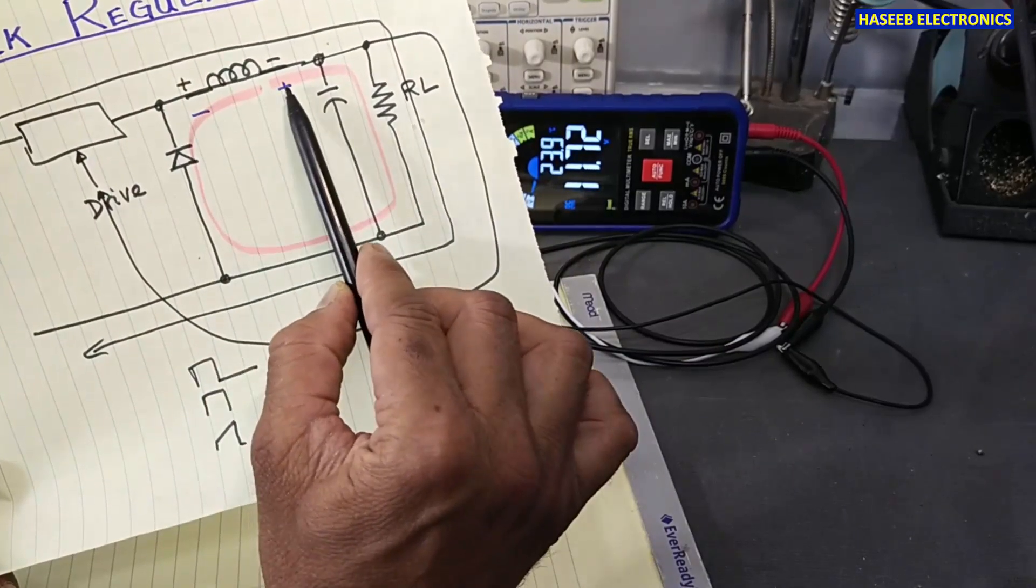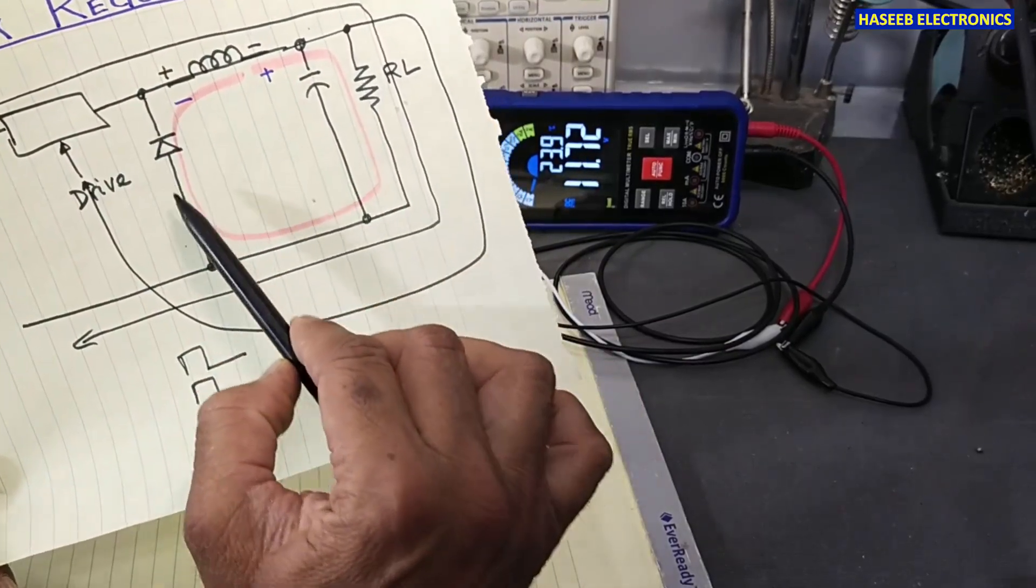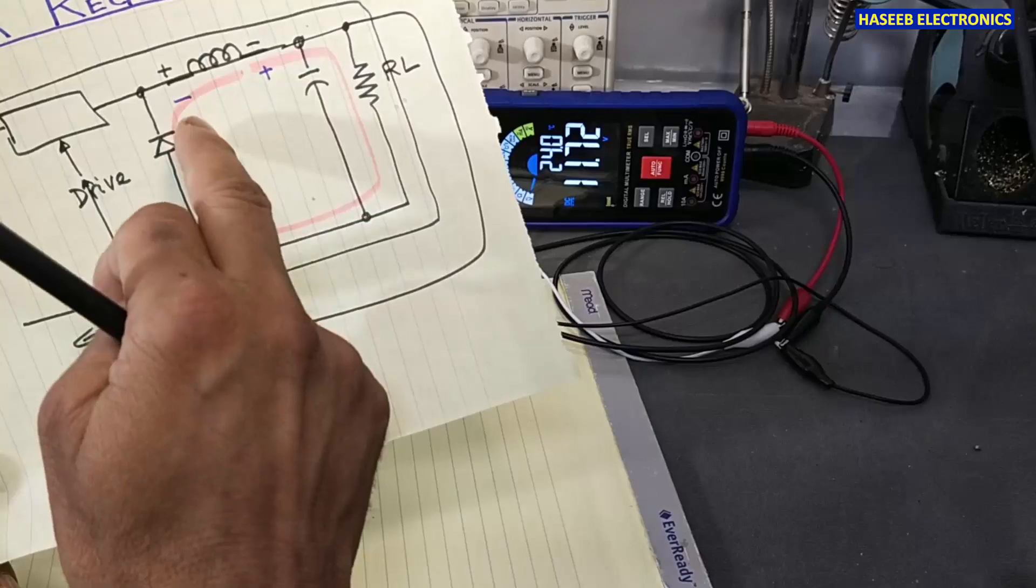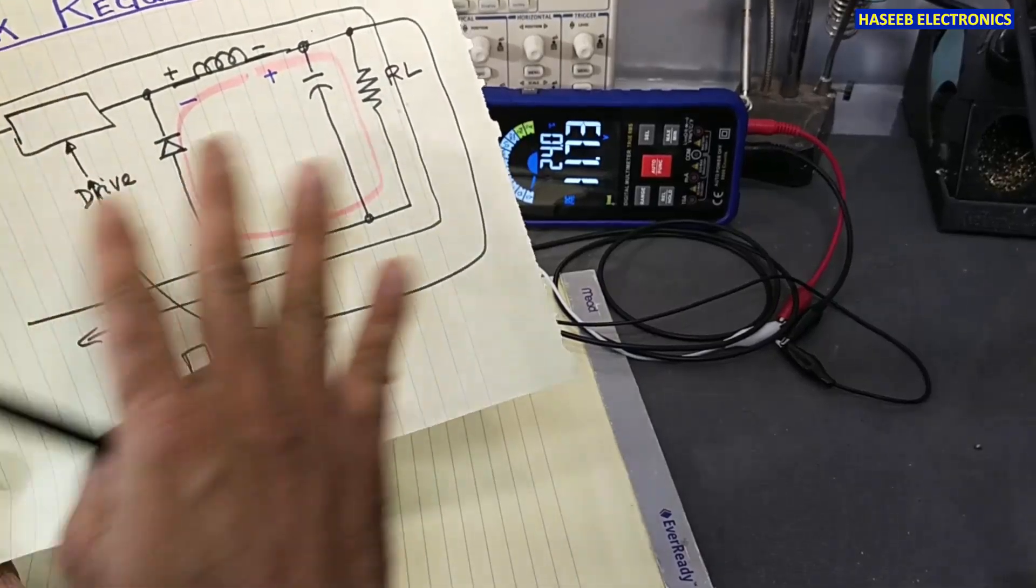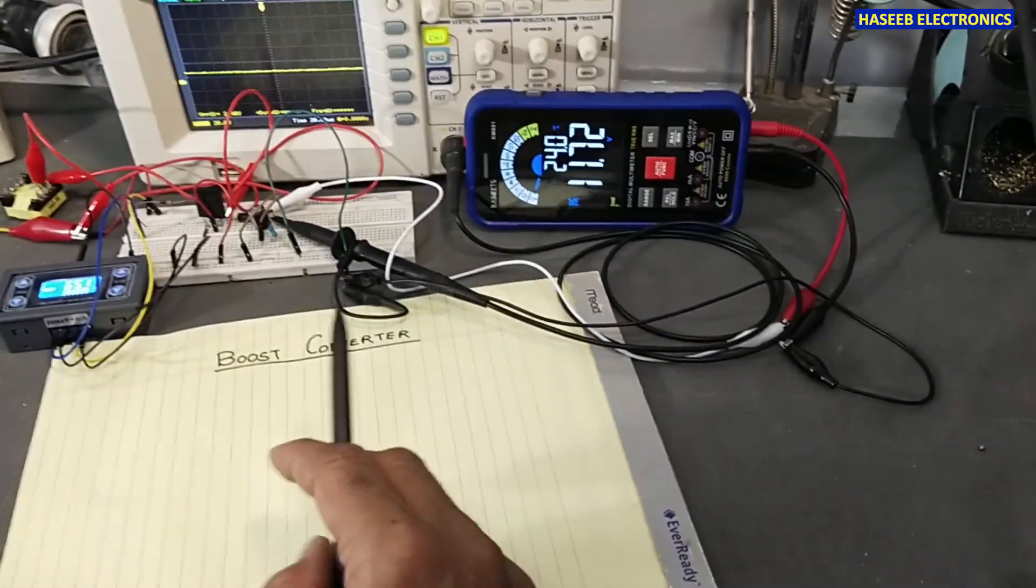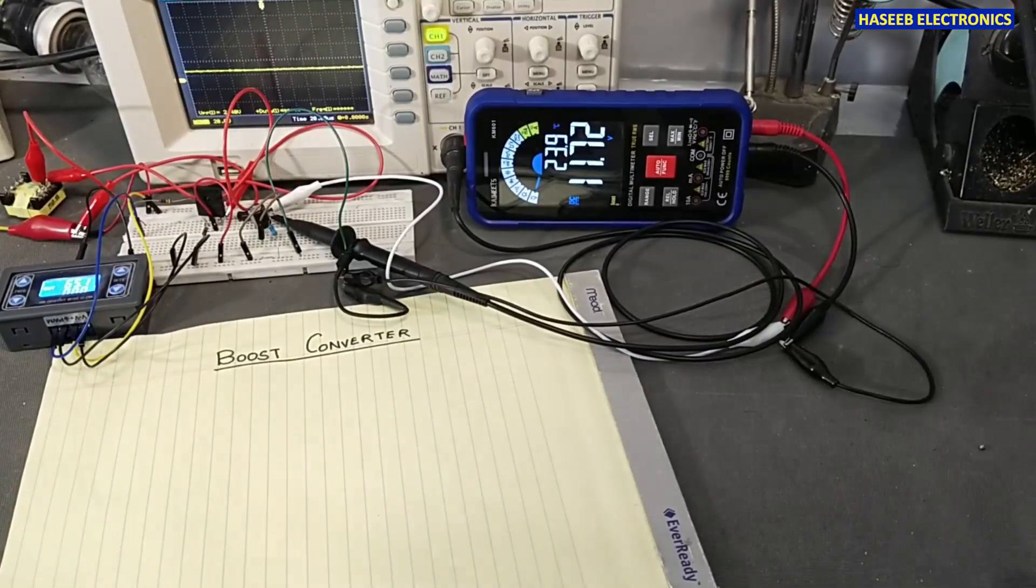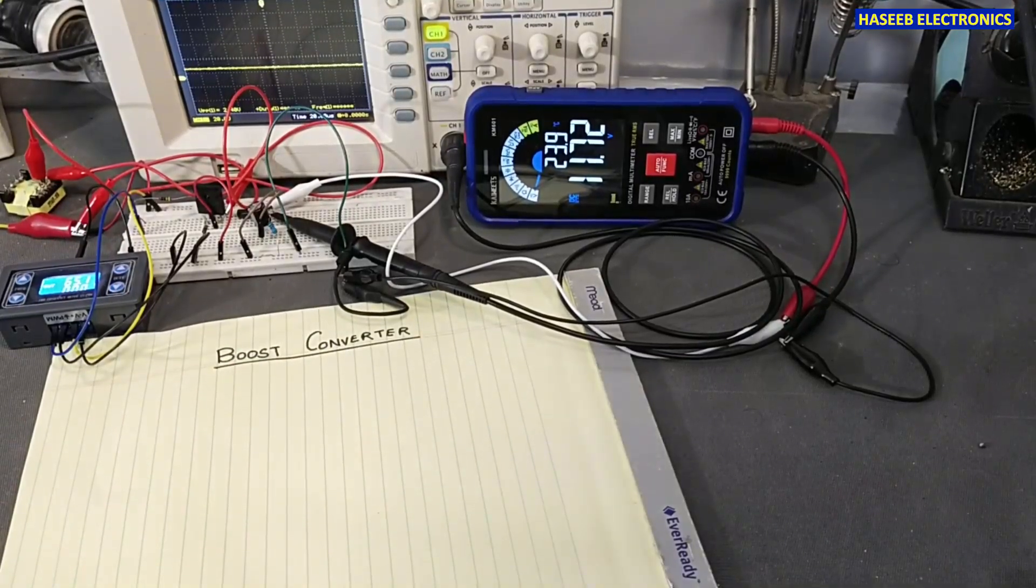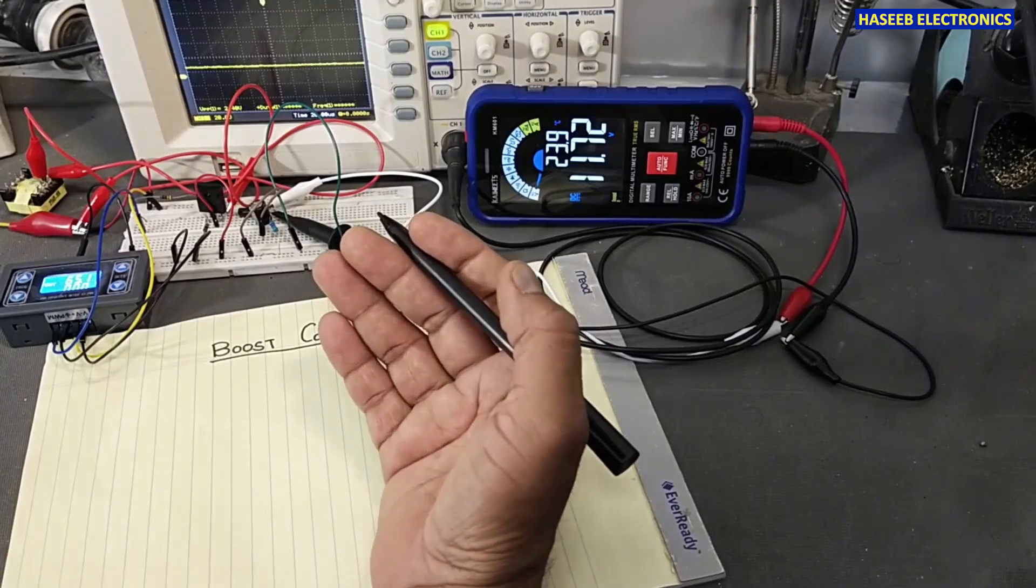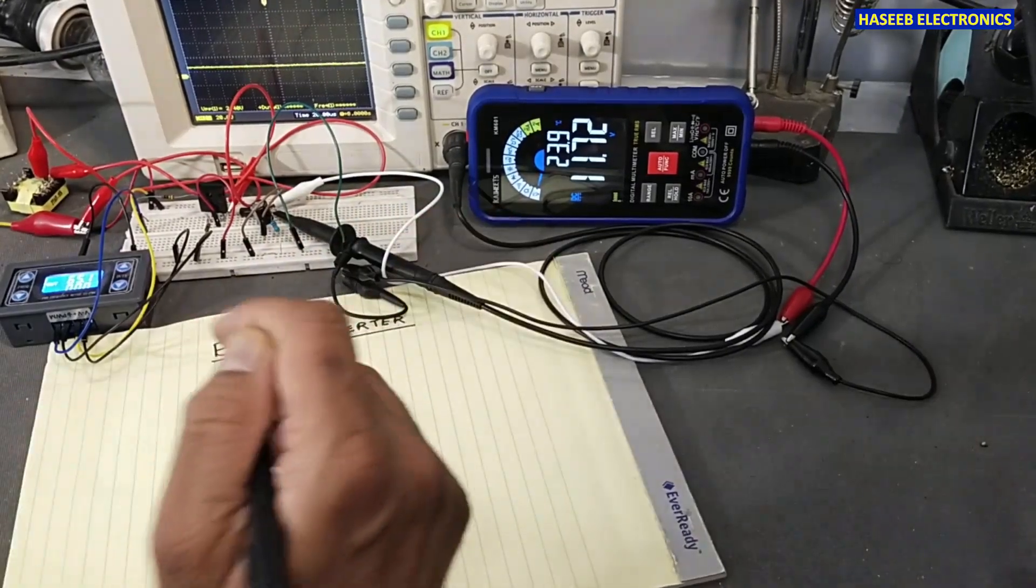It provides secondary current in the off time, so the load will receive regulated voltage. Today we are discussing boost converter. Boost converter is approximately similar to the buck regulator but its circuit has some different configuration.